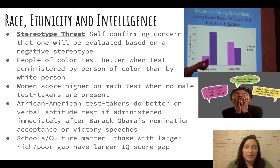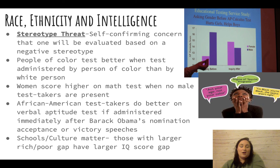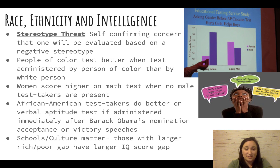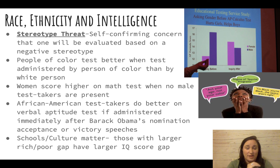Regarding race, an important concept is stereotype threat — simply knowing there is a negative stereotype about your group can affect performance. For example, people of color score better when tested by a person of color. In one study, African American test-takers scored significantly higher on a verbal intelligence test after hearing Barack Obama's nomination or victory speech compared to those who did not.